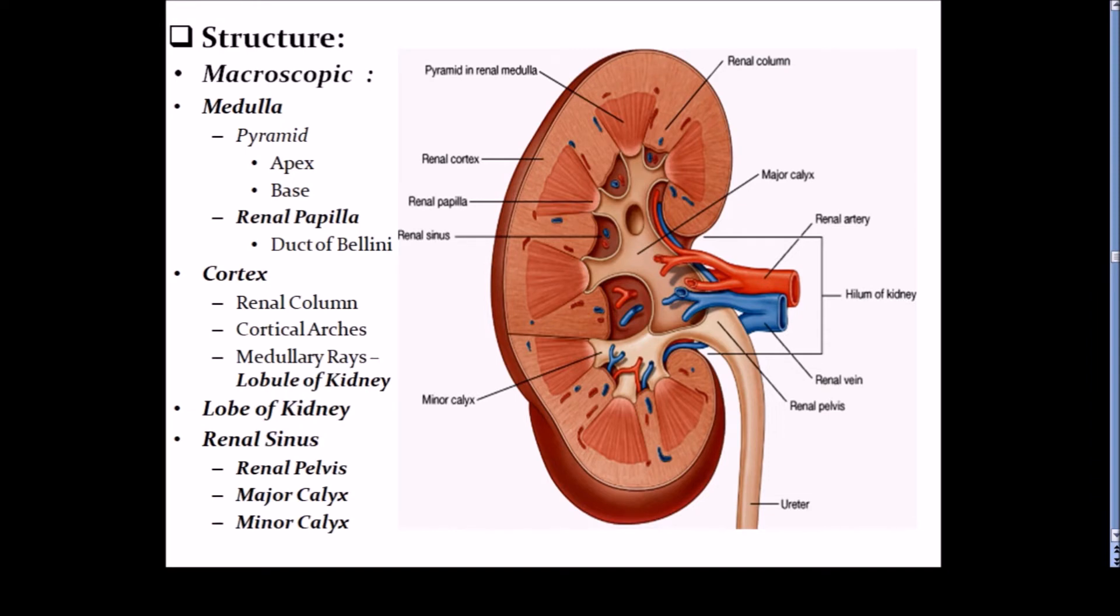Microscopic features of kidney: on the coronal section kidney shows outer reddish-brown cortex, inner pale medulla, and a space that is renal sinus. First, renal medulla: it is made up of about ten conical masses. These conical masses are known as renal pyramids. These renal pyramids are striated and pale. Each renal pyramid has base and apex. The base of renal pyramids is towards the cortex while the apex of renal pyramids, which projects into renal sinus, is known as renal papilla.